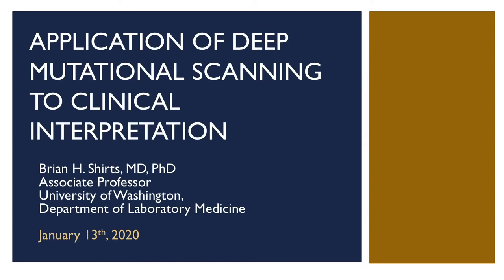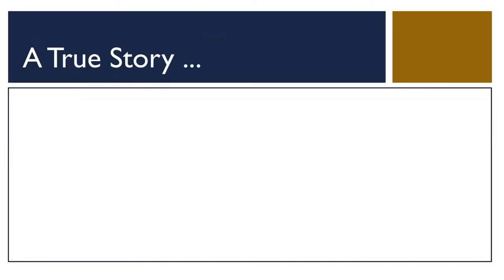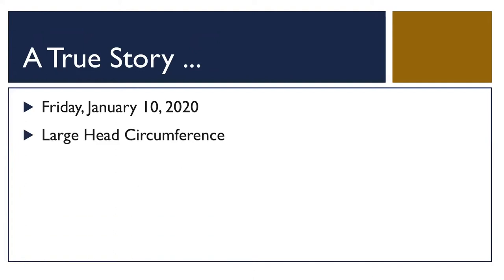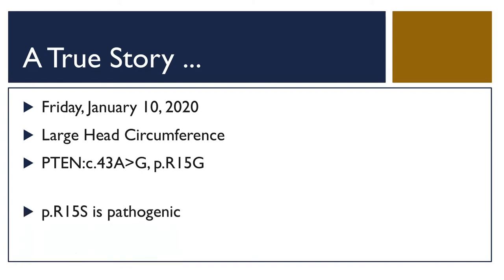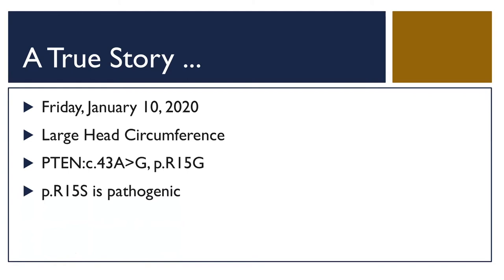I said I'd start with a true story — this was last Friday. I was looking at clinical data from a patient. This is about all of the clinical phenotype I can share: large head circumference. We saw this variant and the first thing we thought was, has anyone ever seen this before? We looked in ClinVar and couldn't find it. For all we know, this is the first time anyone has seen this variant in a human being. There is another PTEN variant at the same amino acid that's pathogenic.